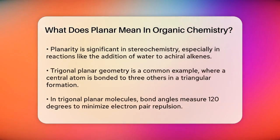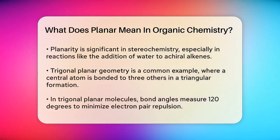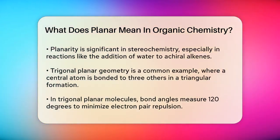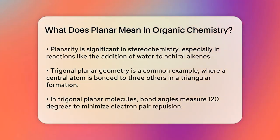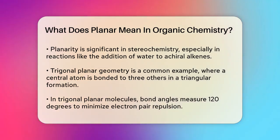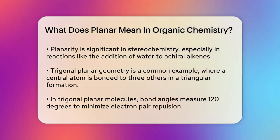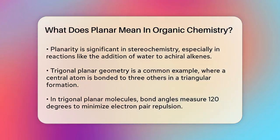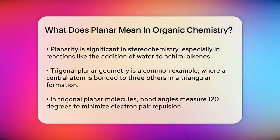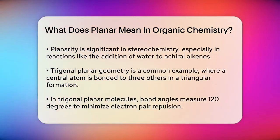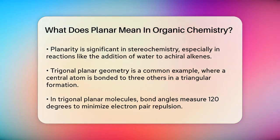This is particularly important when discussing the stereochemistry of chemical reactions, such as the addition of water to an achiral alkene. One common example of a planar molecule is one with trigonal planar geometry. In this shape, the central atom is bonded to three other atoms or groups, and these are arranged in a triangular shape around the central atom. The bond angles in a trigonal planar molecule are 120 degrees, which helps minimize the repulsion between the bonding pairs of electrons.